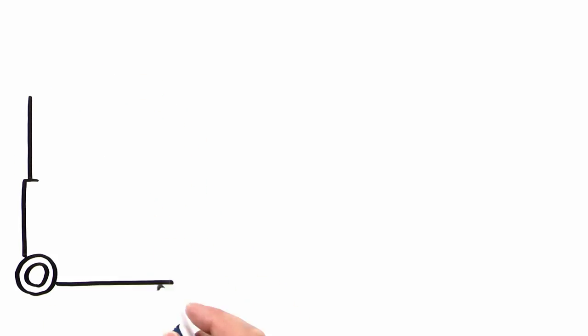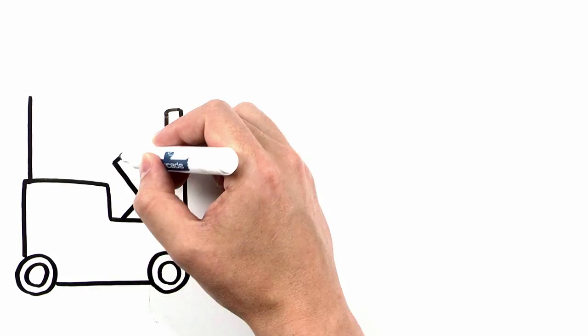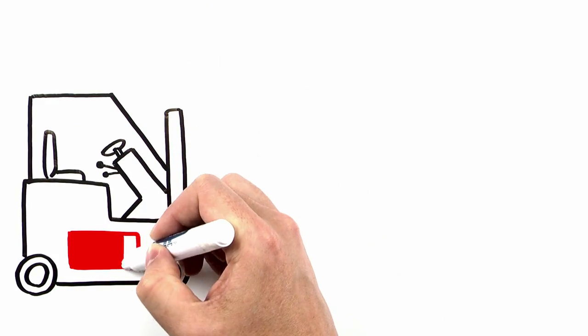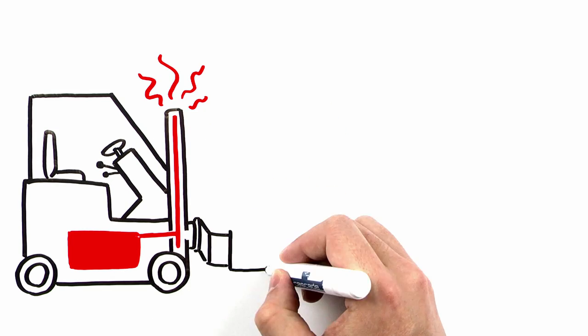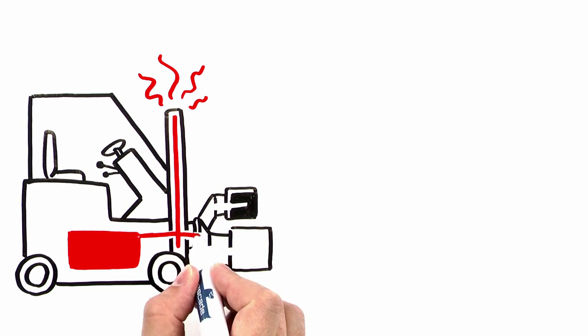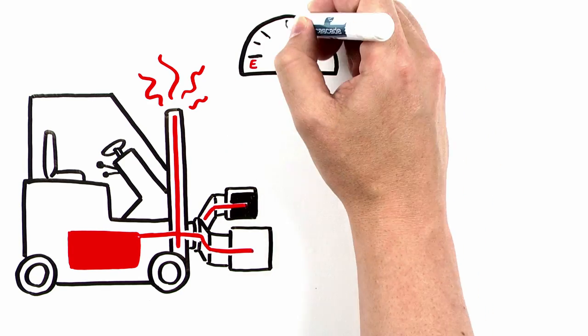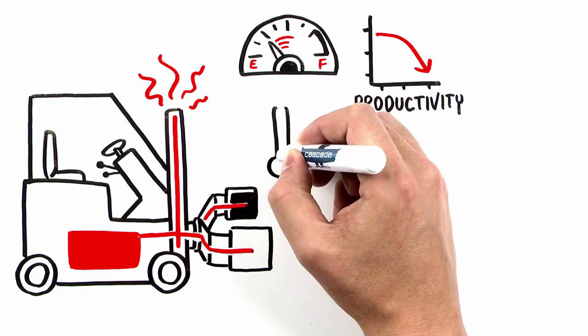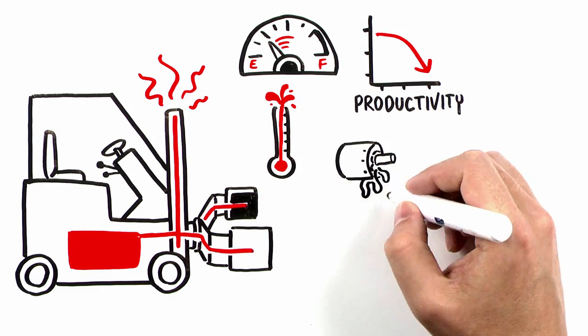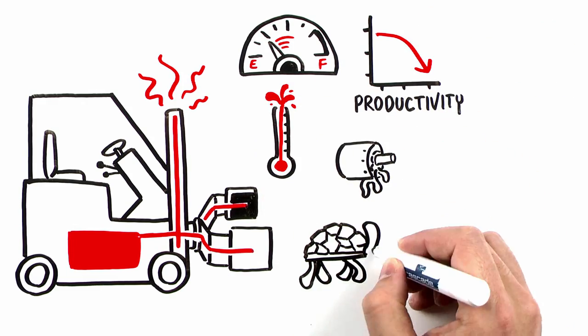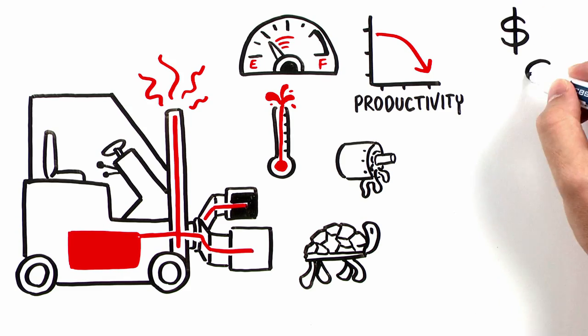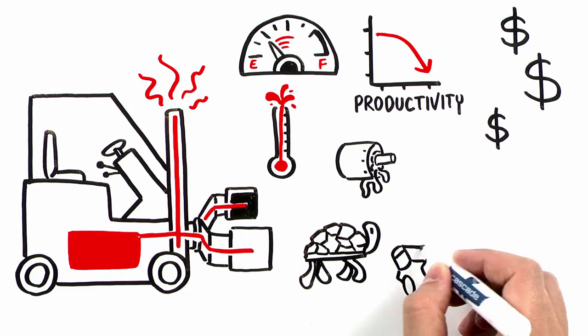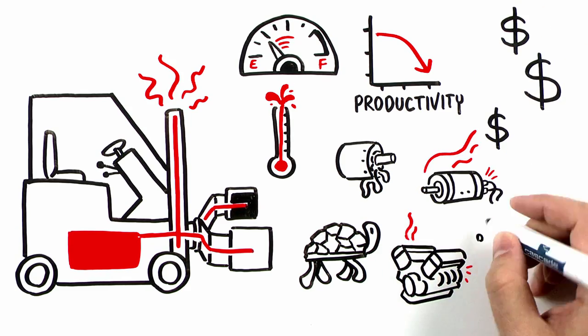When one, or in extreme cases both of these occur, the forklift will exert much more energy and work harder than necessary to deliver hydraulic flow to the attachment, resulting in some of the symptoms we discussed earlier. Increased fuel and power consumption, lower productivity, overheating, hydraulic leaks, slow attachment speed, and additional wear and tear on costly components, such as engines, motors, and hydraulic pumps.